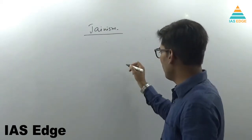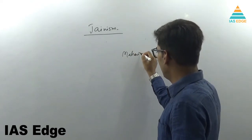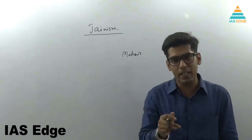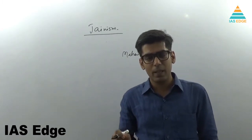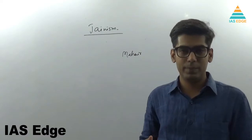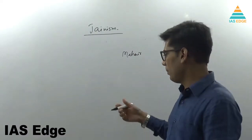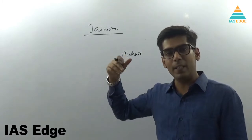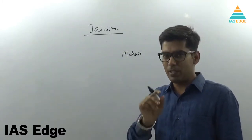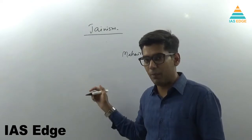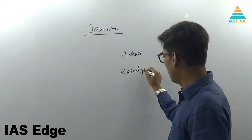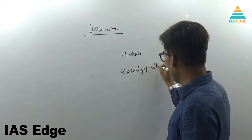So Mahavir also left his home. He left his home at the age of 30 years and he also wandered. He wandered for many years. And then he attained the ultimate knowledge, something very similar to what happened with Buddha. He got Kaivalya, the ultimate knowledge.